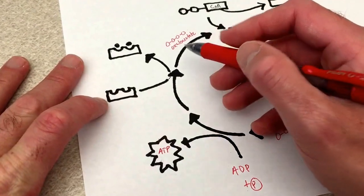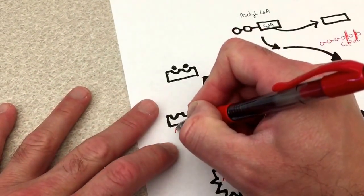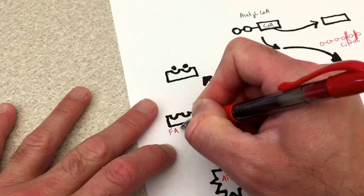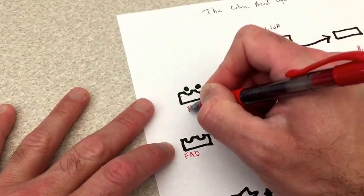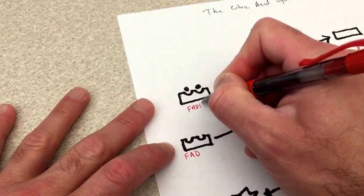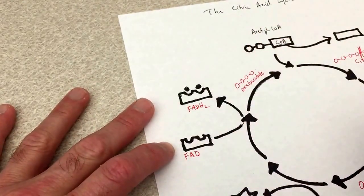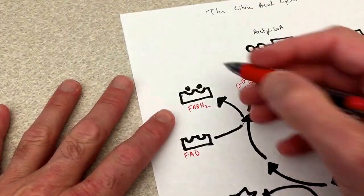Another thing which we get is this molecule of FAD becoming FADH2. This is another electron carrier.